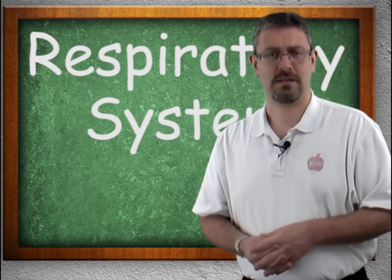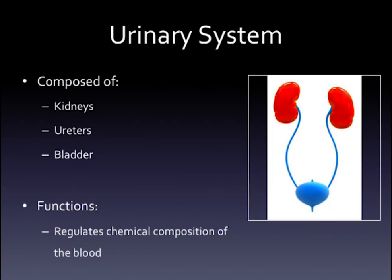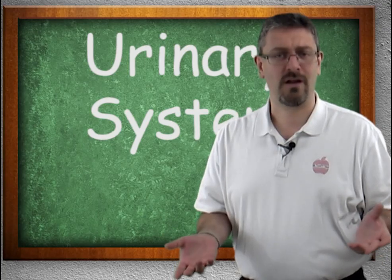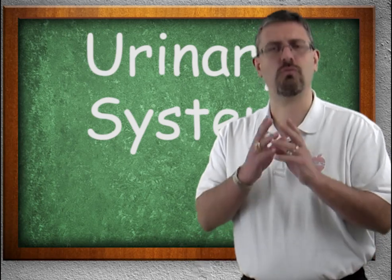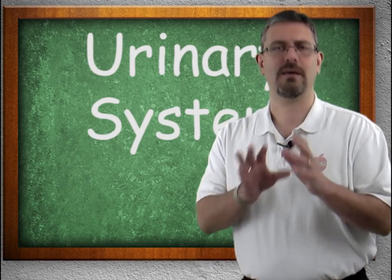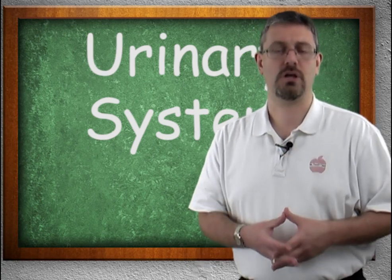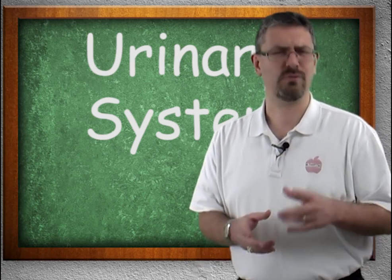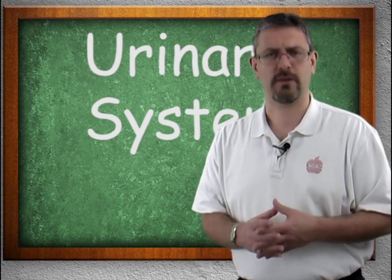The urinary system is composed of the kidneys, the ureter, and the bladder. Its job is to regulate the chemical composition of the blood — that's what it's there for. Really cool stuff, by the way.